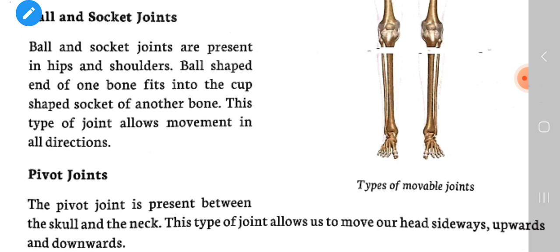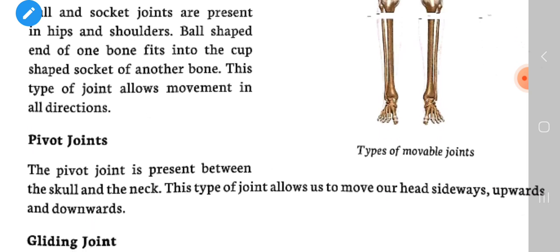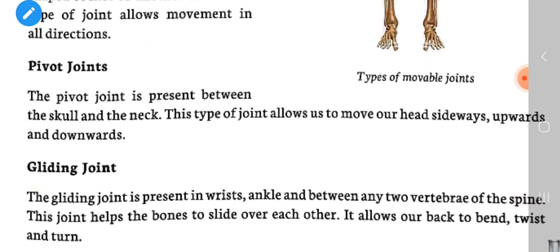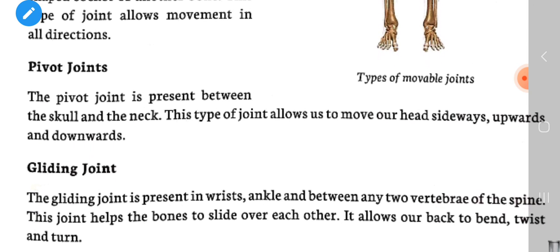The pivot joint is present between the skull and the neck. This type of joint allows us to move our head sideways, upwards, and downwards.